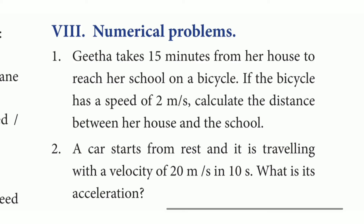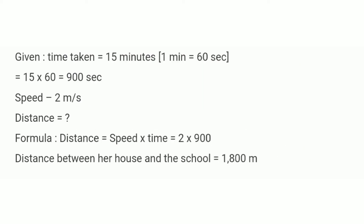Numerical problems. First: Geetha takes 15 minutes from her house to school on a bicycle with a speed of 2 meters per second. Calculate the distance. Time = 15 minutes = 15 × 60 = 900 seconds. Distance = speed × time = 2 × 900 = 1800 meters. The distance between her school and house is 1800 meters.